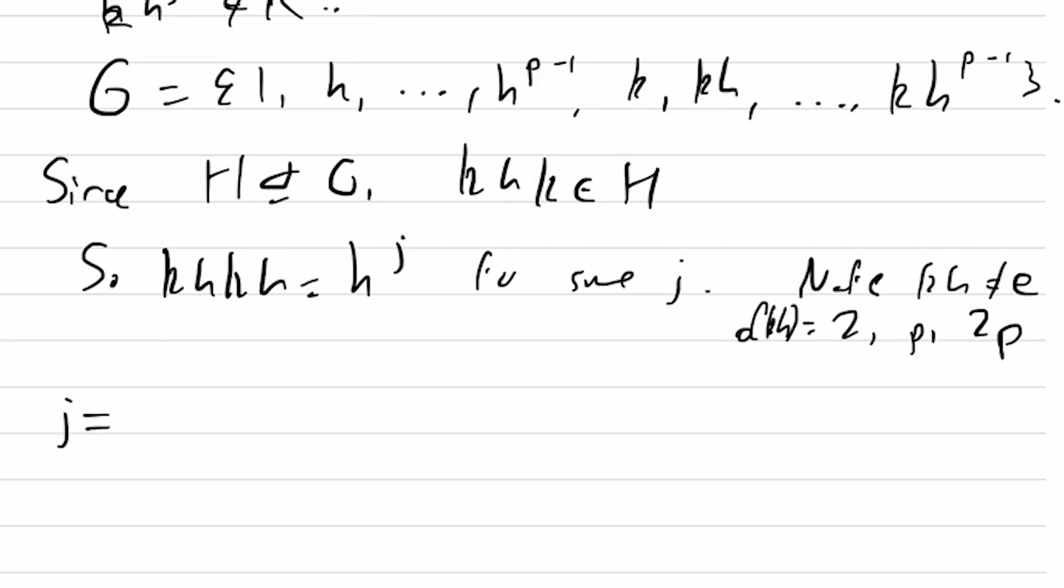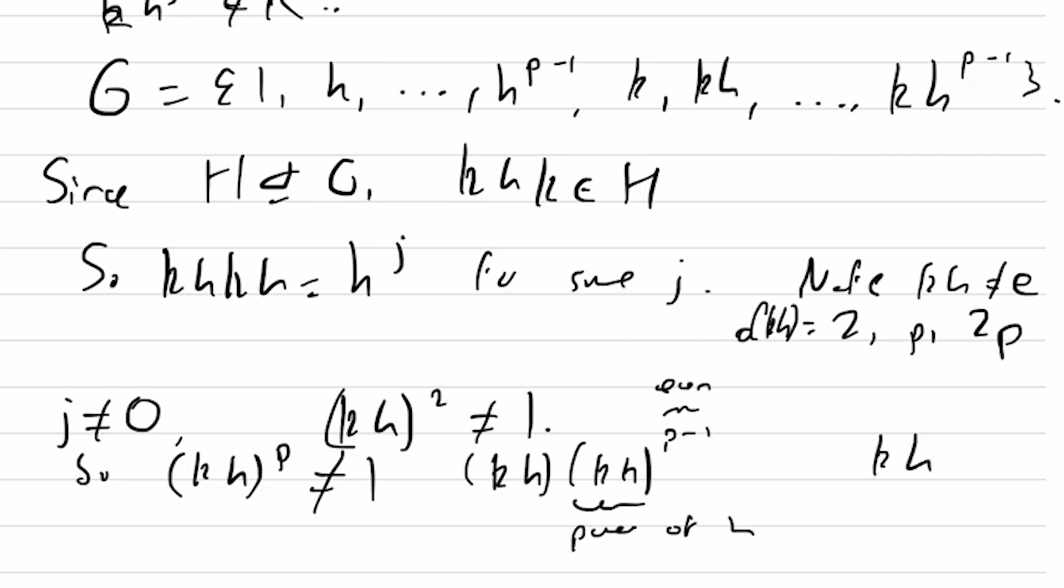If j is not equal to 0, then kh squared is not the identity. So kh to the p is also not the identity because that will be kh times kh to the p minus 1, where this is an even number, so it will be some power of h. Therefore, we'll get something of the form kh to the m, but that's not an important detail.